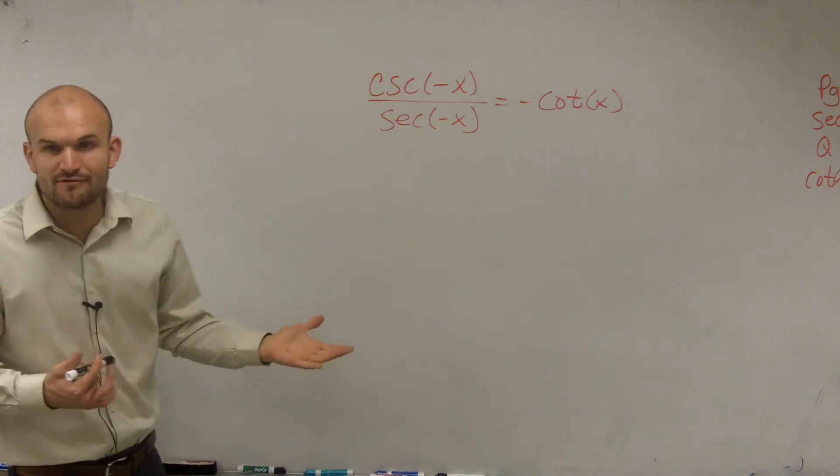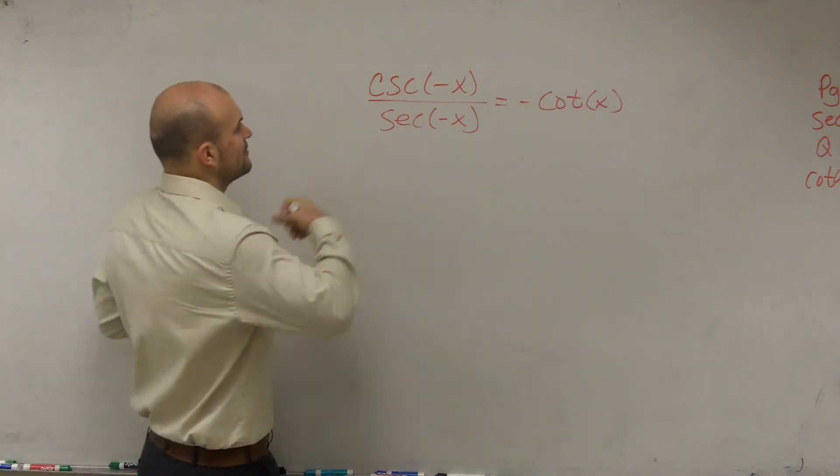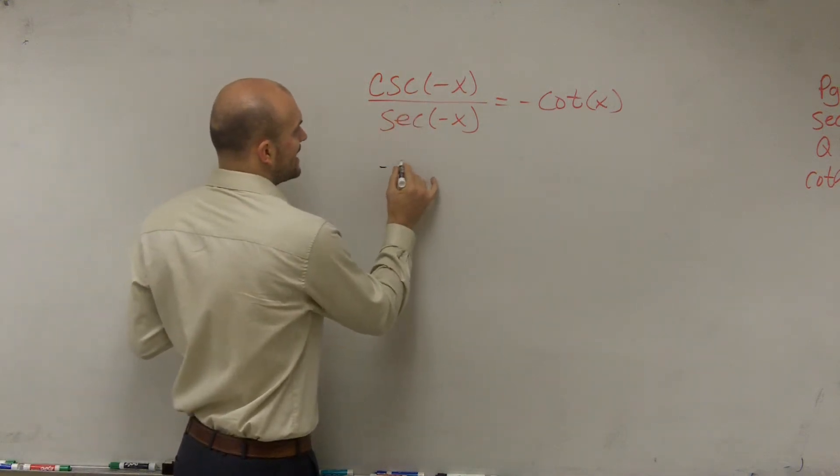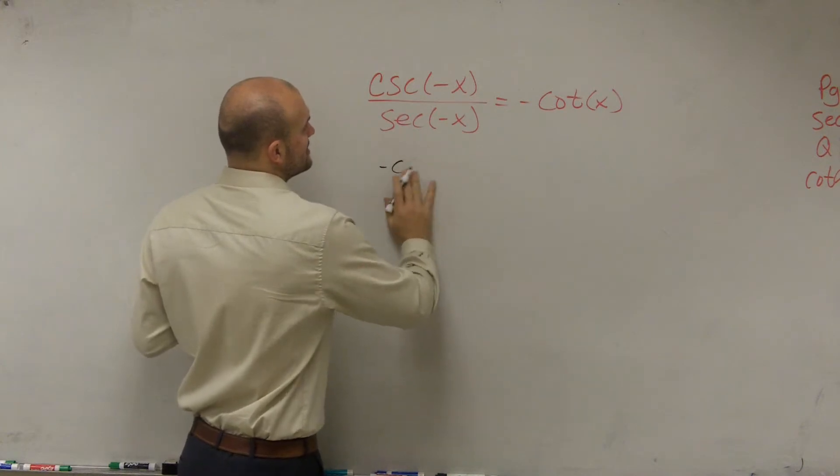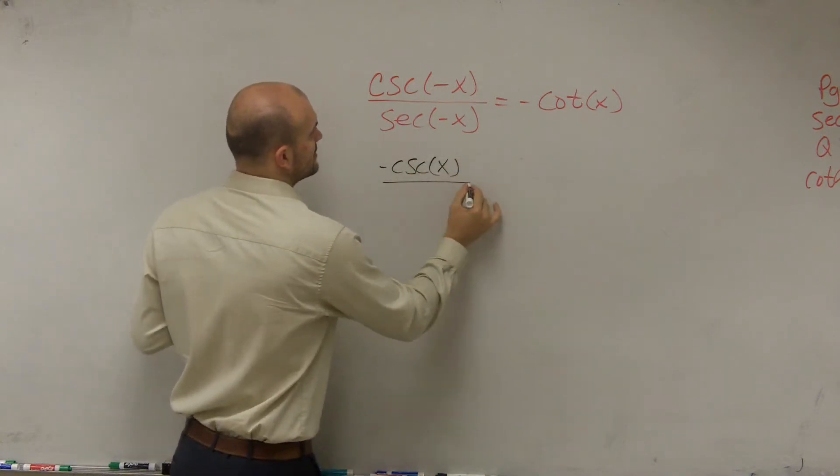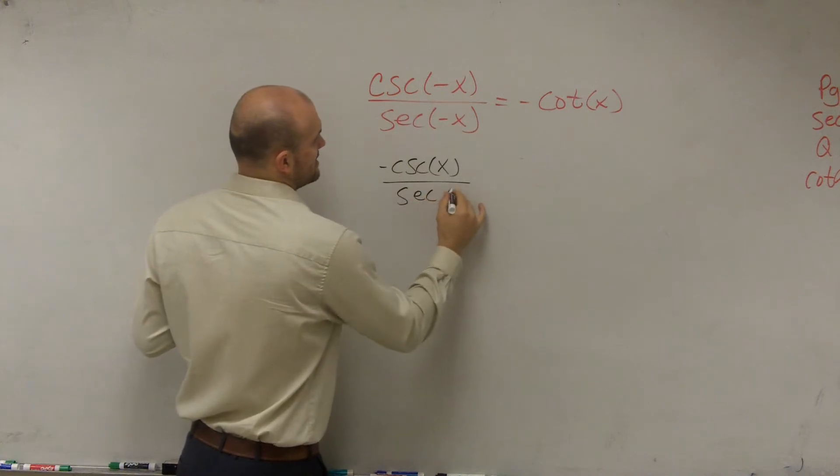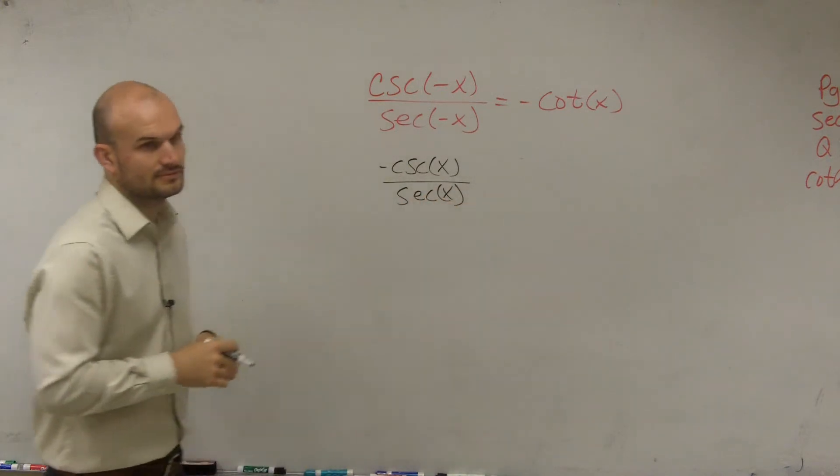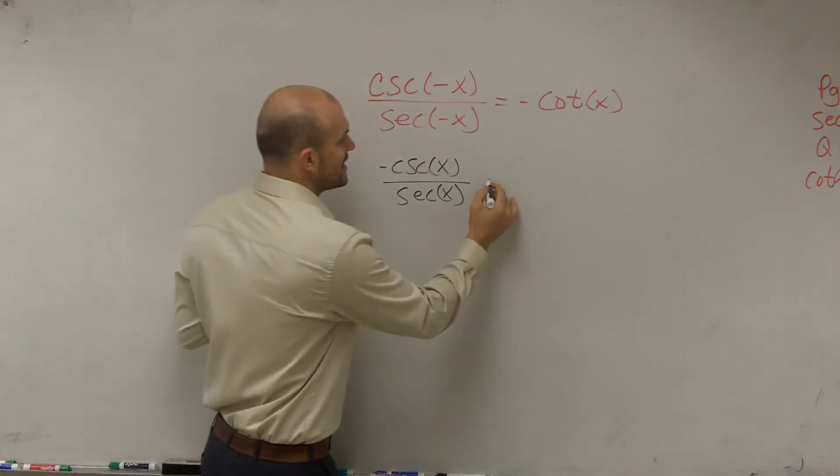So applying my fundamental identities, I know that I can rewrite this as negative cosecant of x divided by secant of x by rearranging this.